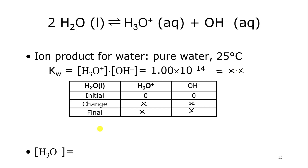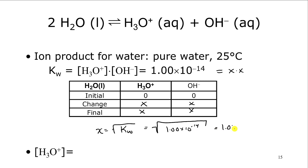So x is going to be the square root of Kw, or the square root of 1.00×10⁻¹⁴, which comes out to be 1.00×10⁻⁷. You should recognize this is the concentration of hydronium and also the concentration of hydroxide in pure water. We'll learn this term pH — it's based on the log of that number. Pure water, when you allow the self-ionization to take place, will have a pH of 7.